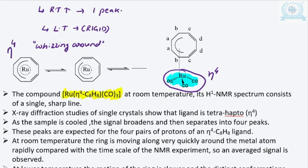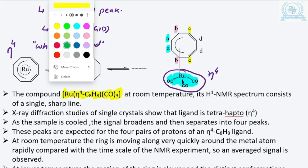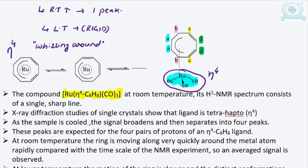At extremely low temperature you can see there are four different types of protons: two numbers of H-a, two numbers of H-b, two numbers of H-c, and two numbers of H-d. So at extremely low temperature you are getting four peaks.